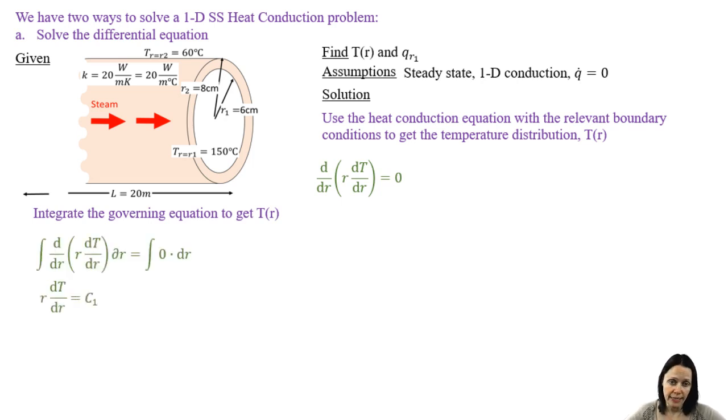Multiplying each side by dr and integrating, we can see that r dt dr is equal to c1, the constant of integration. And now we divide through by r, multiply each side by dr, and integrate. The integral of 1 over r is the natural log of r. And so now we have the temperature distribution with two constants of integration.